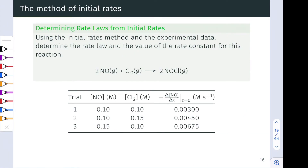In this practice problem, we're asked to use the initial rates method and the given experimental data to determine the rate law and the value of the rate constant. The reaction is 2NO + Cl2 → 2NOCl, which has two reactants, so we need at least three experimental trials to determine the orders of NO and Cl2. To begin, we isolate experiments where each reactant is systematically changed while the other's concentration is held constant. Looking at trials one and two, the NO concentration is kept constant while the Cl2 concentration is increased by a factor of 1.5.